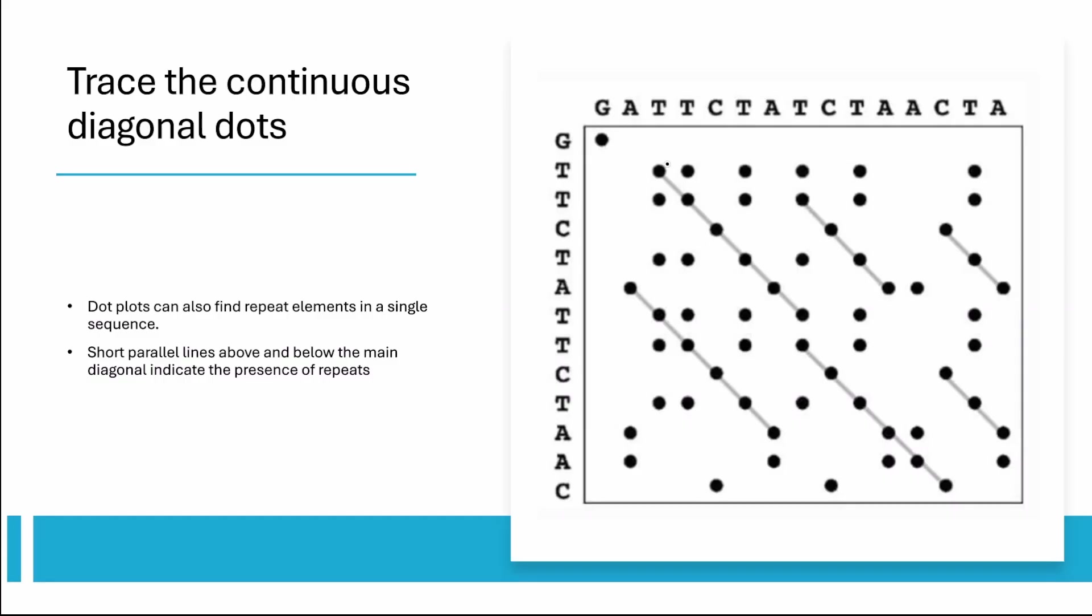For example, in this example over here, which corresponded to T, T, C, T, A, T, we have another line which is right above the main diagonal, which is this right over here. And it corresponds to T, C, T, A.